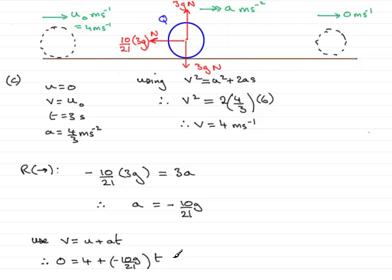And if I rearrange this, we get that, if we add for instance 10G over 21 to both sides, what we get is that 10G over 21 times T must equal the 4. Multiplying both sides by 21 and dividing by 10G gives that T equals 4 times 21, which is 84, divided by then the 10G.